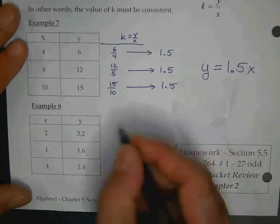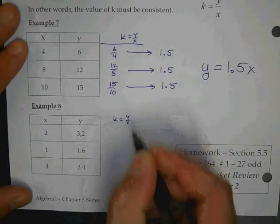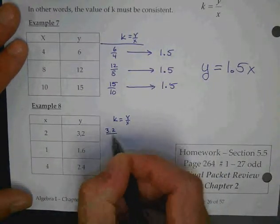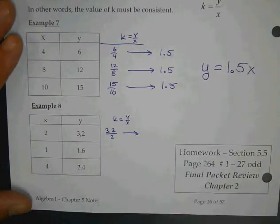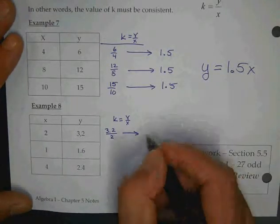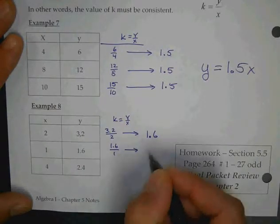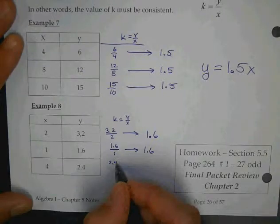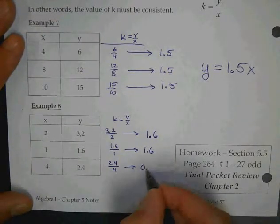Okay, so let's look at our bottom one. Put your next one. k equals y over x again. What is 3.2 divided by 2? How much do we get there? 1.6. What's 1.6 divided by 1? 1.6. What's 2.4 divided by 4? 0.6.